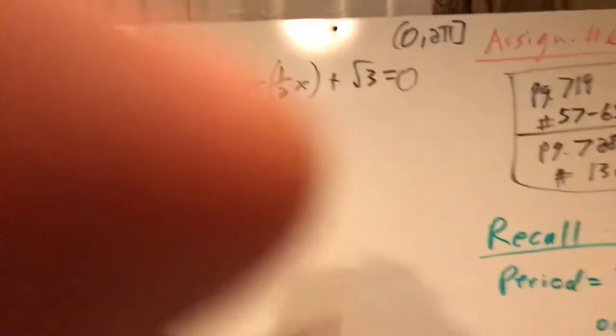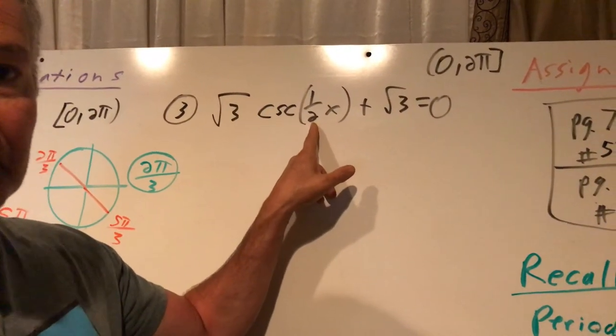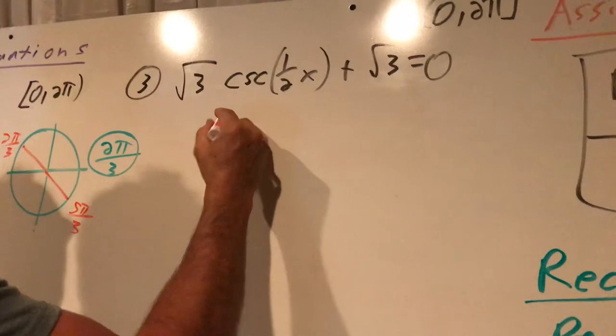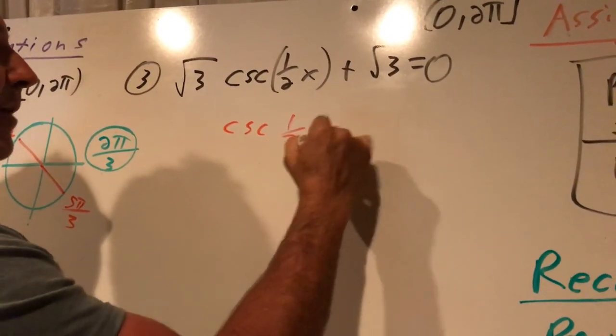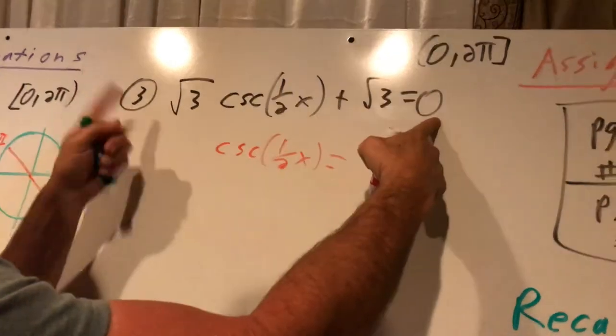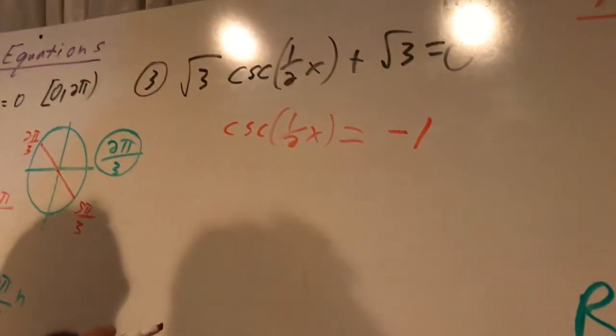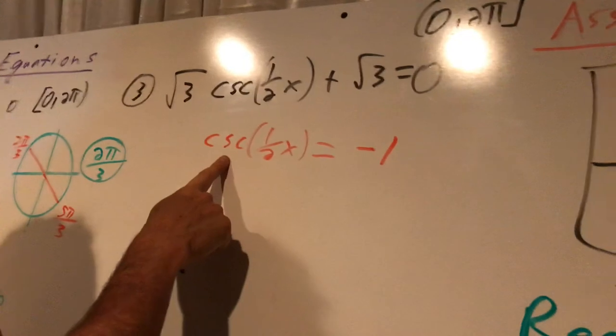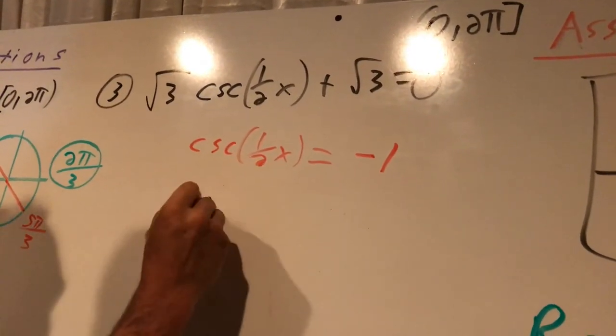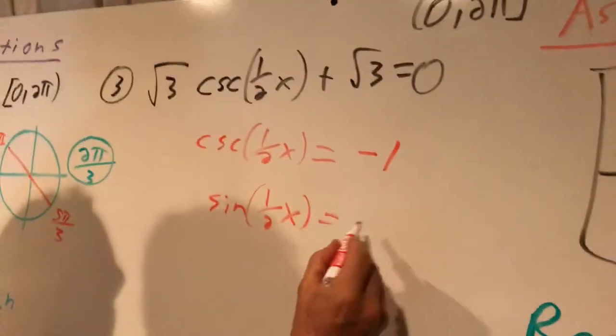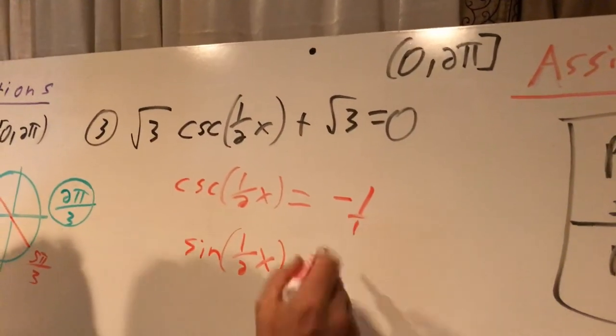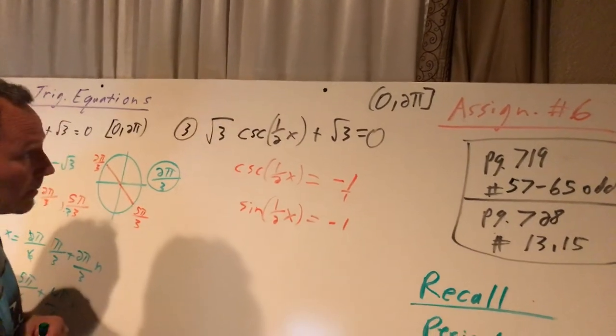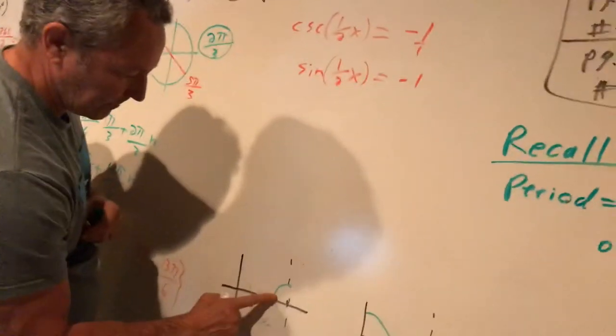This one's interesting because this is 1 half x. Remember that that's an x change, which is a y. So it's really twice as wide. So on this one, let's get it solved for itself. So cosecant of 1 half x. I'm going to minus root 3 and then divide by root 3. That's going to be negative 1. I'm going to flip this. This is cosecant. I can't work with that. So whose partner is cosecant? That's sine. Sine of 1 half x equals flip this over. This is negative 1 over 1. It'll still be negative 1. That's what I'm working with.